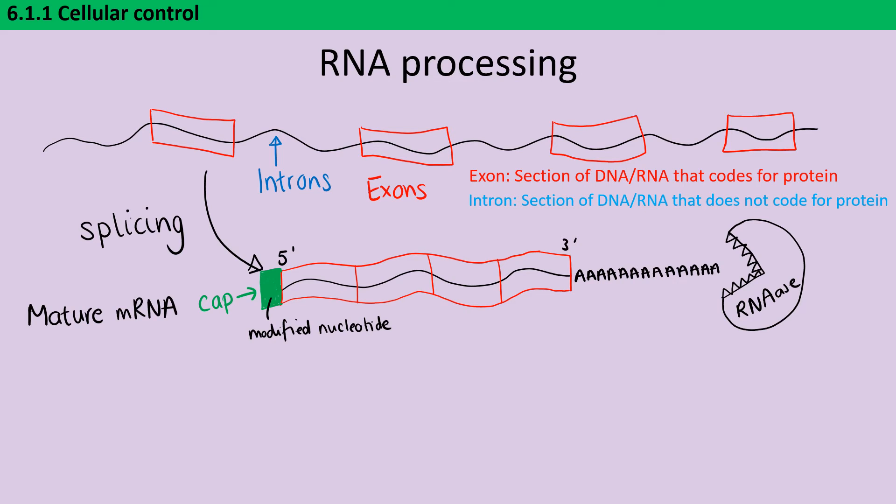Once these things have happened, we can now refer to this as mature mRNA. At this point, this can be translated to make protein. However, there are a couple of other things we can do. One of these is alternative splicing. So this is the idea that we may have one string of mRNA, which could actually make a couple of different proteins.